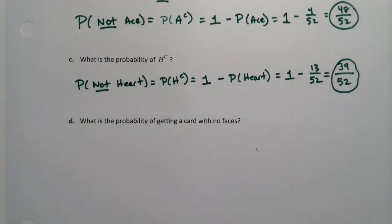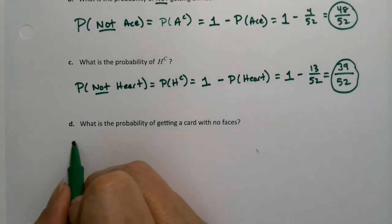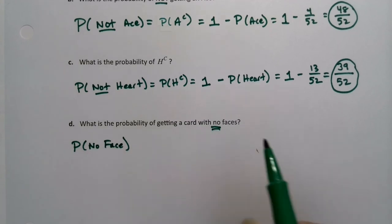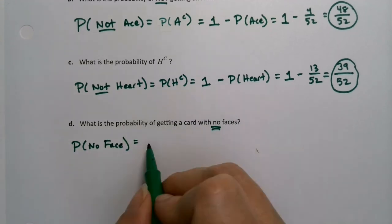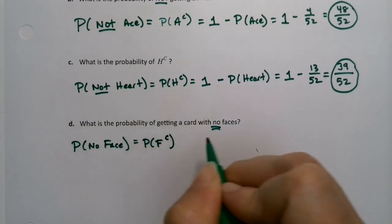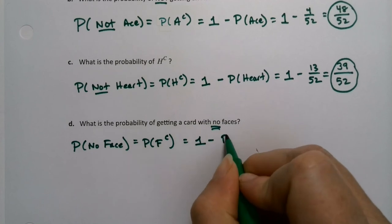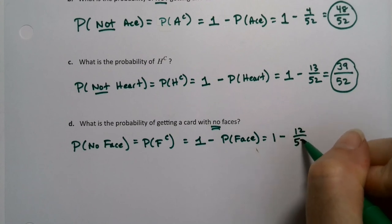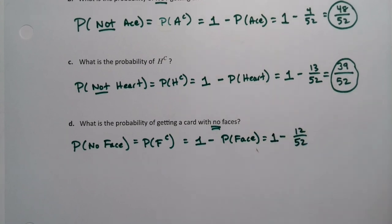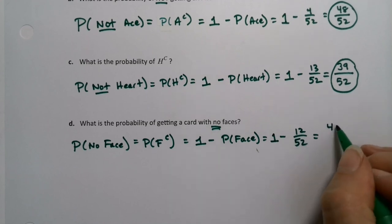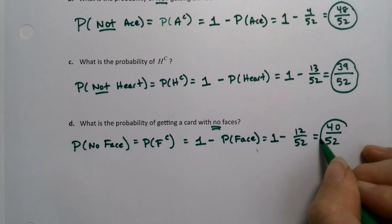All right, what is the probability of getting a card with no faces? So I want no face, right? Well, that's complement because they're doing negative voice there. I mean, they didn't say the word not, but that's what they're saying. So I want face complement, so I want one minus the probability of face, which is one minus, there's 12 face cards. So again, envision in your mind 52, 52 take away 12 is 40. There's 40 non-face cards in a deck of cards.